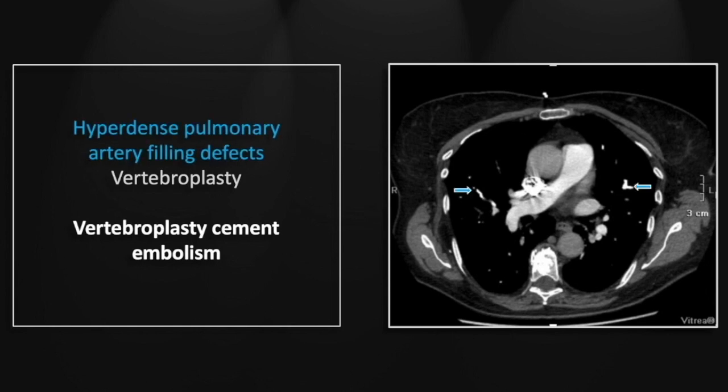There are linear branching densities throughout both lungs in a pulmonary vascular distribution, and there is vertebroplasty cement with an extravertebral linear contrast density denoting the venous entry point for this contrast.